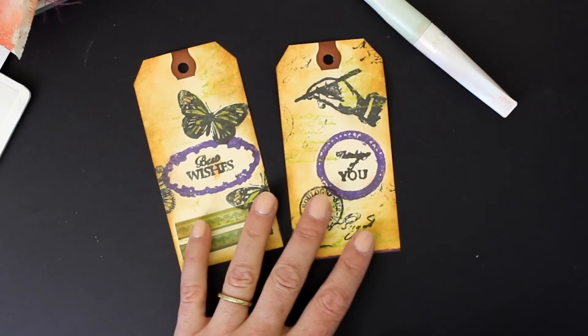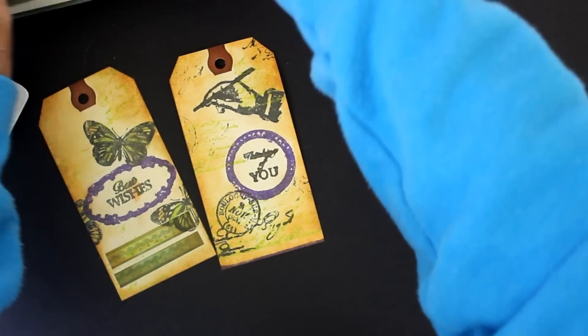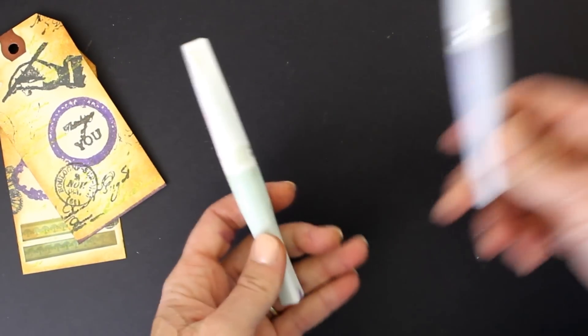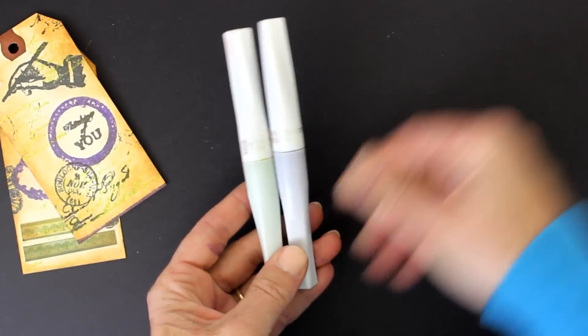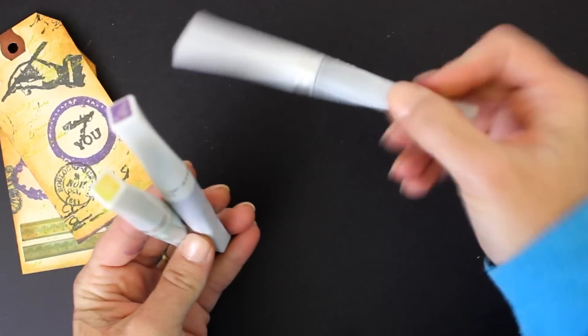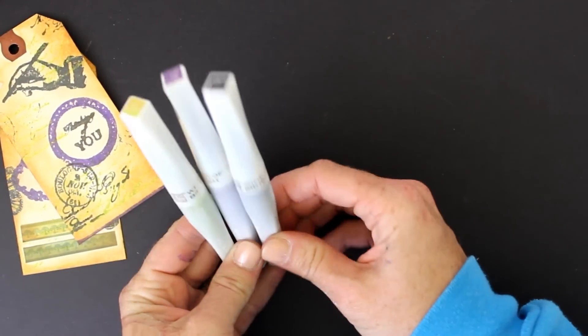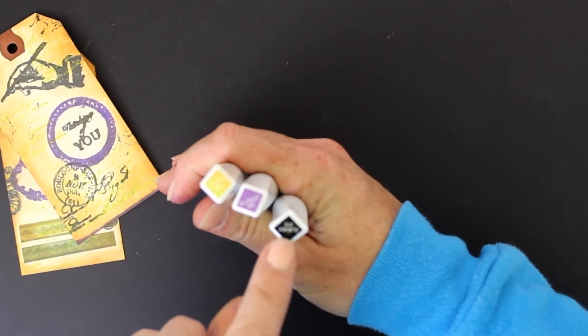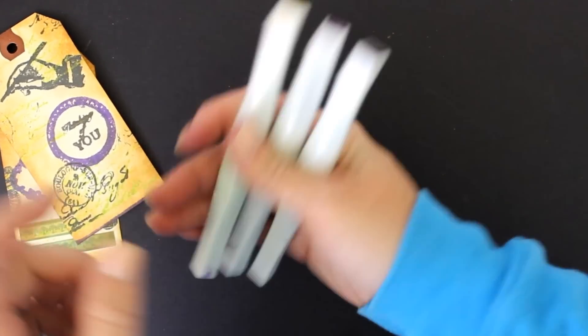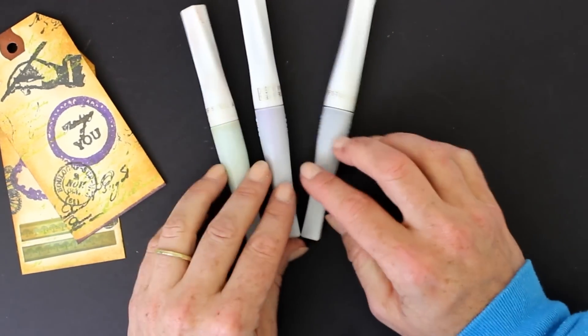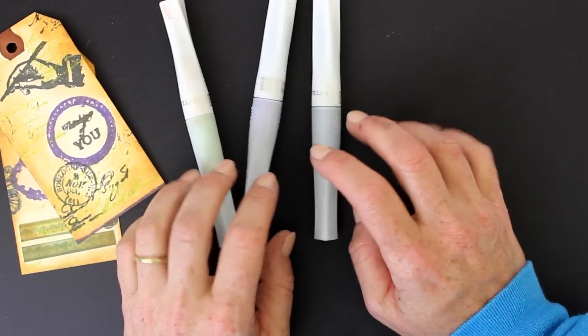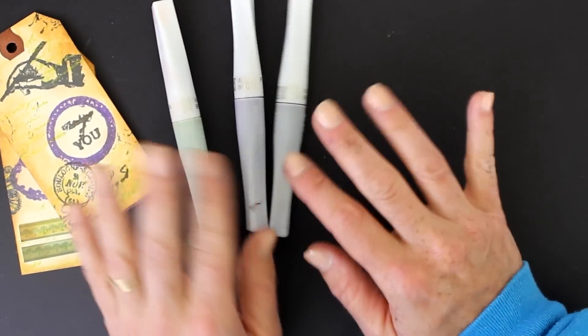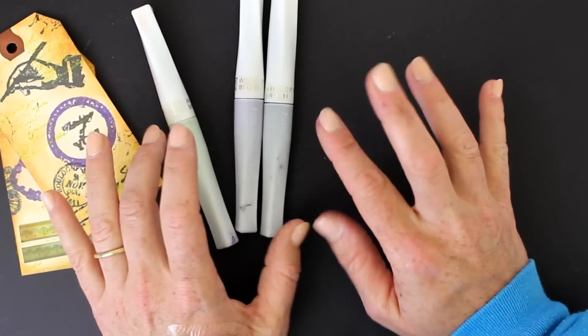That's your little mini review on the Kuretake Zig Wink of Stella pens. I only bought three—I bought these with my own funds just to try out. Oh, by the way, I do like the fact that they have the little things on the tip so you can see what colors you've actually got. These were kind of expensive, they were like in the $7.99 realm.